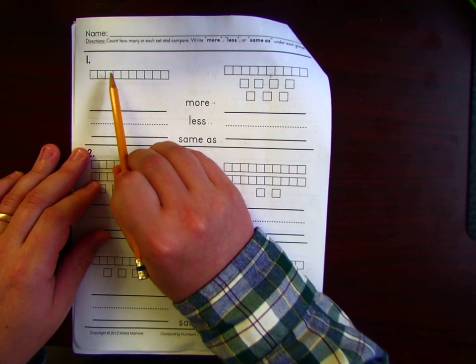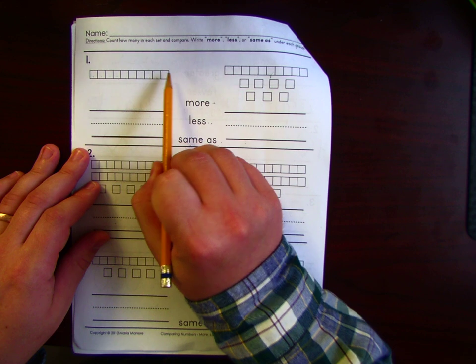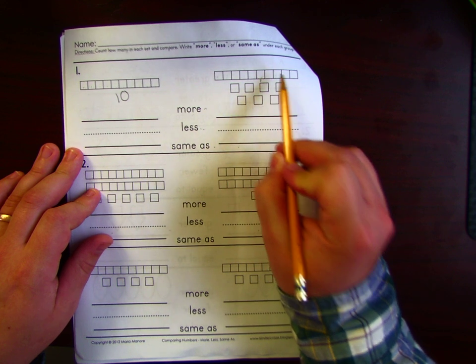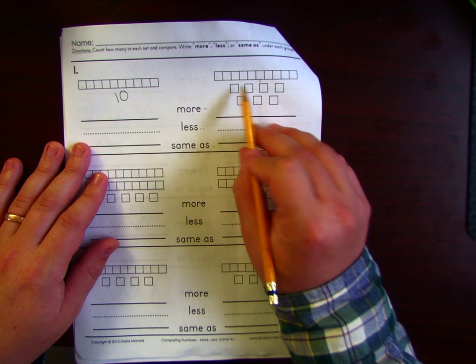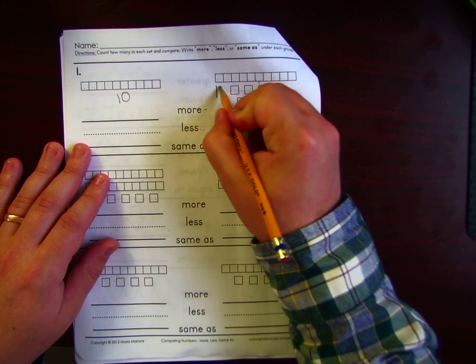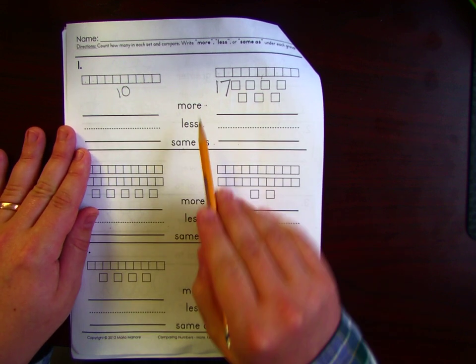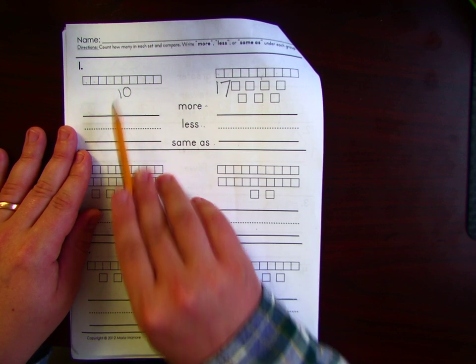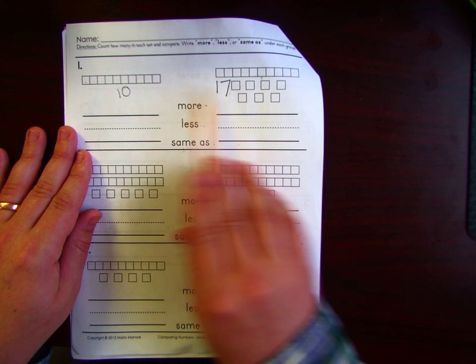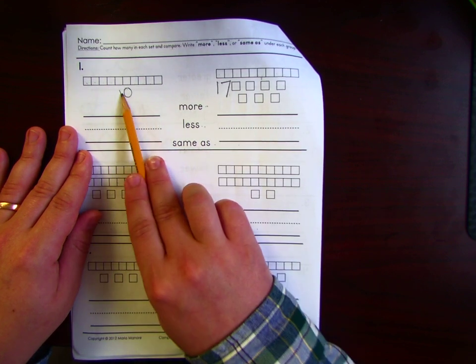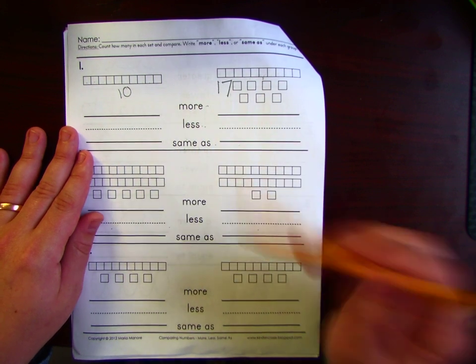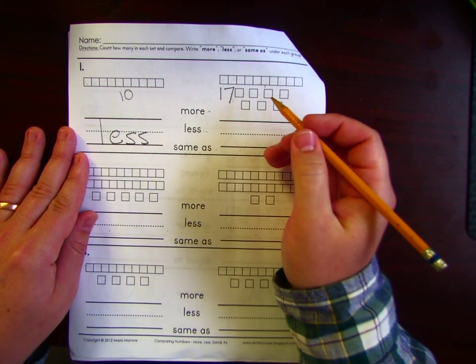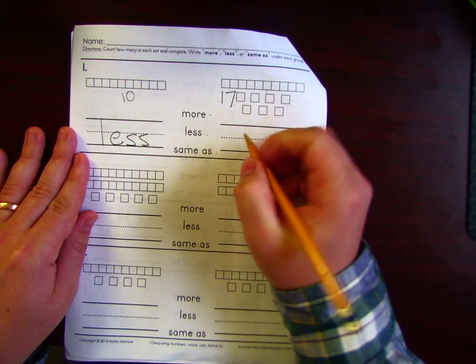So first, let's count. 1, 2, 3, 4, 5, 6, 7, 8, 9, 10. Alright. 11, 12, 13, 14, 15, 16, 17. So I have some choices. I have the word more, the word less, and the word same as. So let's see. Is 10 more than 17, or is 10 less than 17, or is 10 the same as 17? That's right. 10 is less than 17.